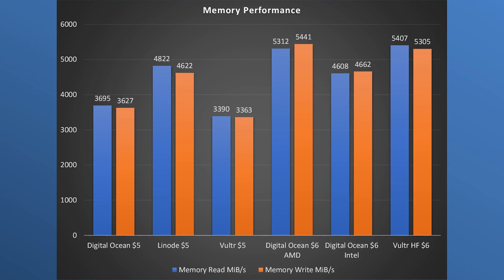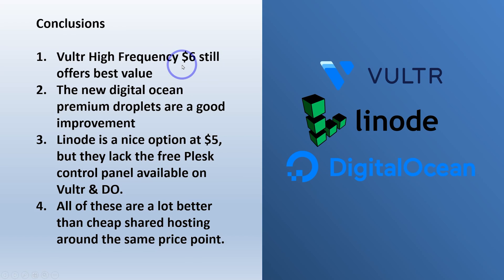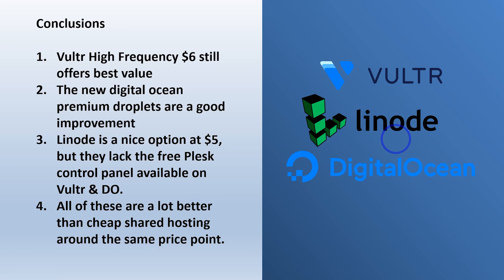Now that we've looked at the performance tests, let's look at the conclusions. We can probably say that Vulture High Frequency is definitely still the best value — that's my personal preference. These new DigitalOcean Premium Droplets are a good improvement, but Vulture still has a bit of an edge in terms of its high frequency performance. If you are stuck at $5 and don't want to spend $6, then Linode is a very nice option. It's worth noting that they lack the free Plesk control panel you can get from Vulture or DigitalOcean, and Linode was a little bit more complex to set up.